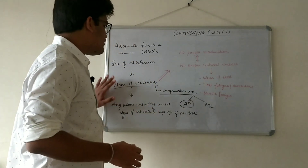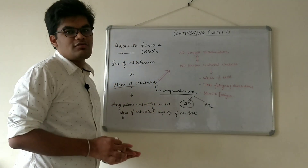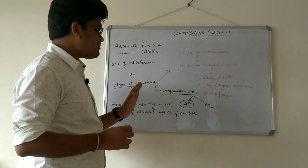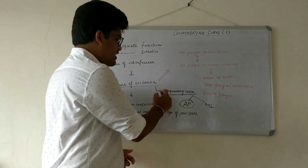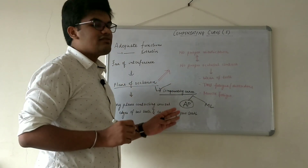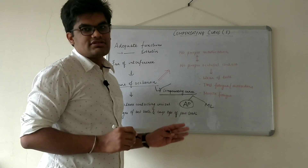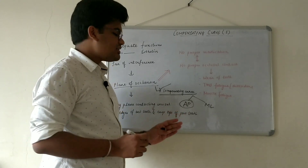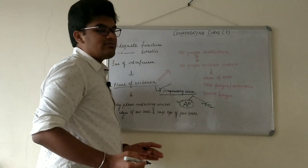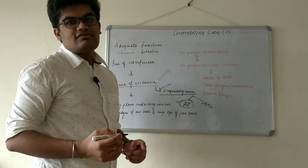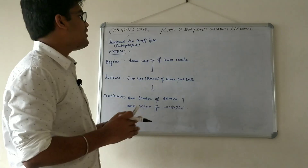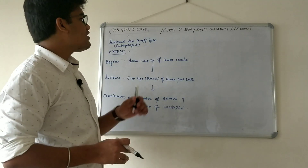The question then is how this plane of occlusion is incorporated into the prosthesis. This plane of occlusion is incorporated with the help of compensating curves. These compensating curves are of two types: the anteroposterior curve and the mediolateral curve. Today we will be discussing the anteroposterior curve in detail — that is, the curve of Spee.